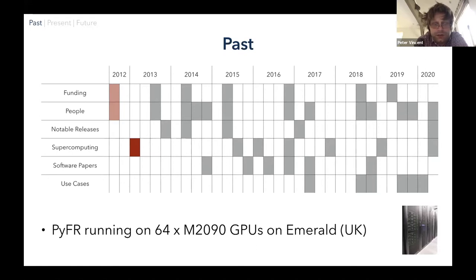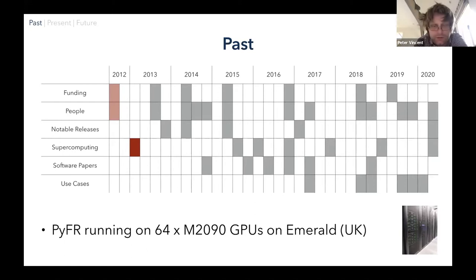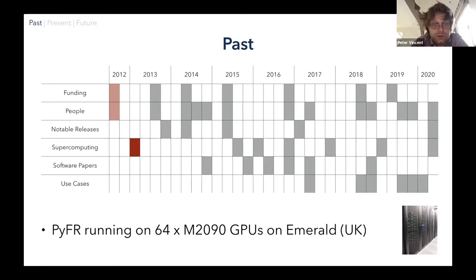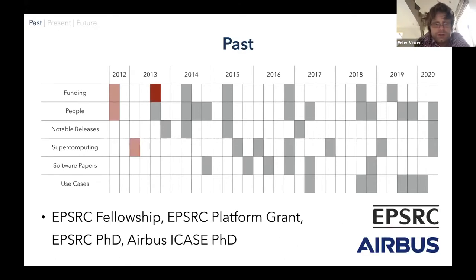By early 2013, we had a viscous compressible Navier-Stokes solver in 3D on hexahedral elements, running on tens of what were state-of-the-art Nvidia GPUs at the time, on a system called Emerald in the UK. That was one of our initial milestones.